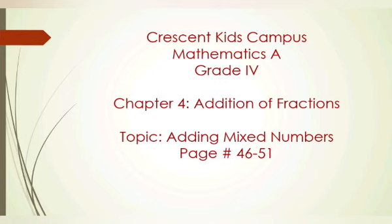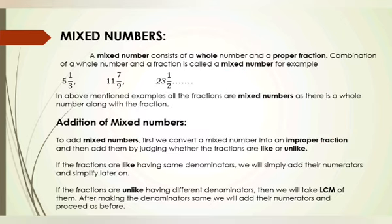What are mixed numbers? A mixed number consists of a whole number and a proper fraction. The combination of a whole number and a proper fraction is called a mixed number. It is a number in which one part is a whole number and the other is a proper fraction.